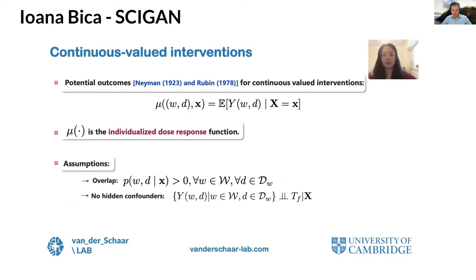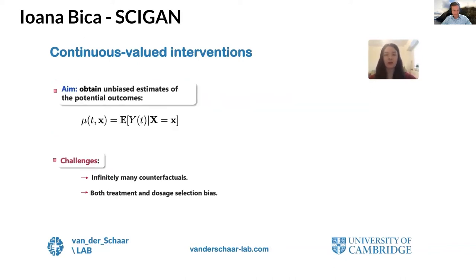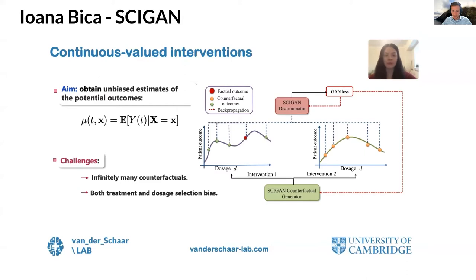Following Rubin and Neyman's potential outcomes framework, we assume that for all treatment-dosage pairs W and D, there is a potential outcome. Our aim is to estimate the individualized dose-response curves, which contain all potential outcomes — both factual and counterfactual — given patient characteristics. To identify these potential outcomes from observational data, we need to make two assumptions: overlap and no unmeasured confounders. Learning from observational data is already challenging with a single discrete intervention; this is exacerbated with continuous interventions where the number of counterfactuals is no longer even finite. Moreover, the decision to intervene is non-random and depends on patient features, creating treatment and dosage selection bias. We introduce CyGAN, a novel causal inference method to estimate effects of such continuous valued interventions.